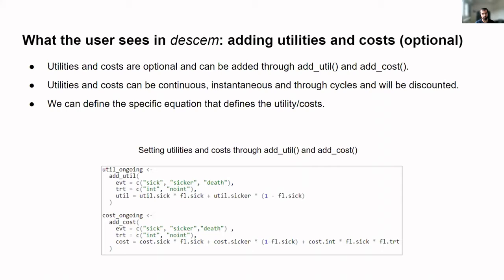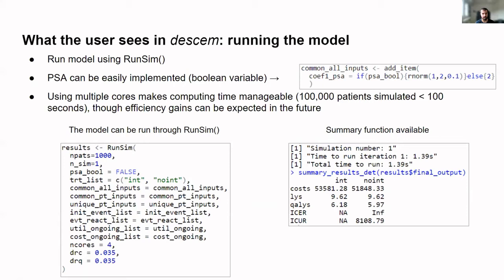Once you have the parameters, initial events, reactions to events, and optionally utilities and costs, you plug all of these into our run_sim function, along with other parameters like the number of patients, number of simulations, and discount rates. You can also implement PSA — it's just another variable, so you can configure your parameters based on this variable. On top of this, we use parallel computing to make running times manageable. We're not claiming it would be as fast as running this through C++, but that was not our objective. This is a very recent package, so we expect efficiency gains in the future as we improve and open our code.